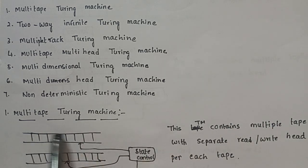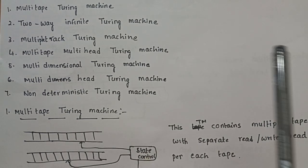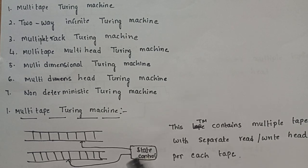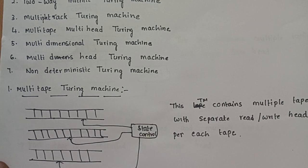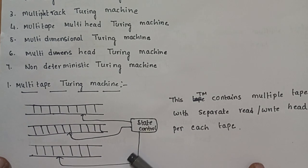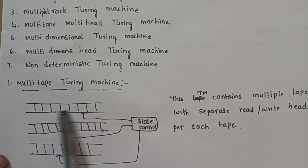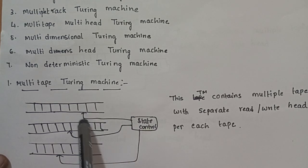The first variant of the Turing Machine is the Multi-Tape Turing Machine. Multi-tape means more than one tape. Normally, if you look at a standard Turing Machine, there is one tape and one tape head. Here, with multi-tape, there is more than one tape, and each tape has separate tape heads.